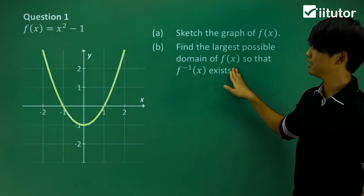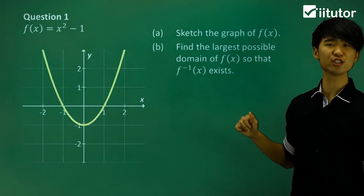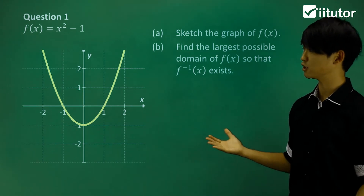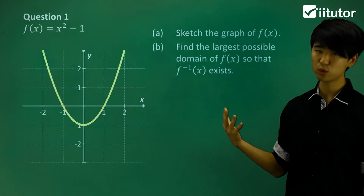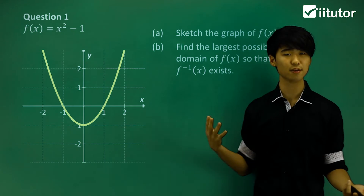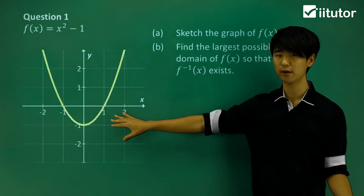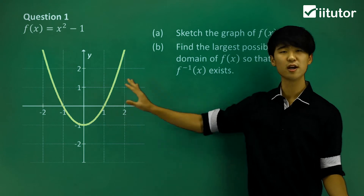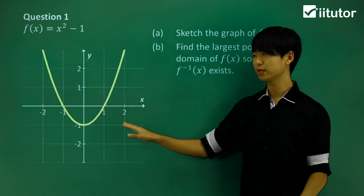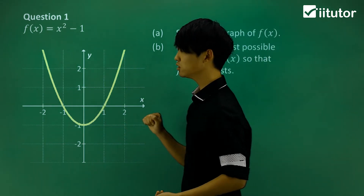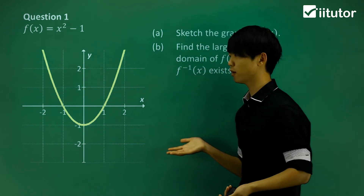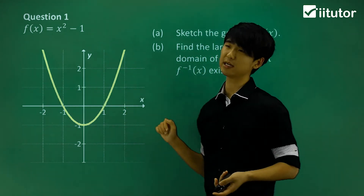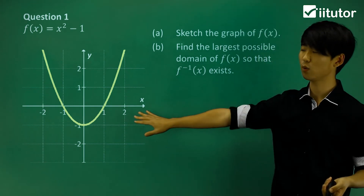In part B, it's asking me to find the largest possible domain of f(x) so that an inverse function exists. An inverse function will exist if my function is 1-to-1. Currently, this is not a 1-to-1 function — it's actually a many-to-1 function, meaning multiple x values give the same y value.